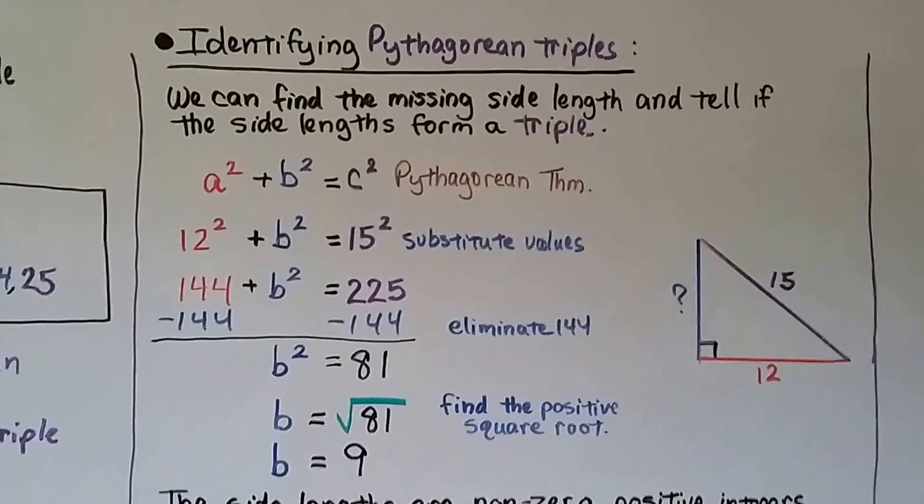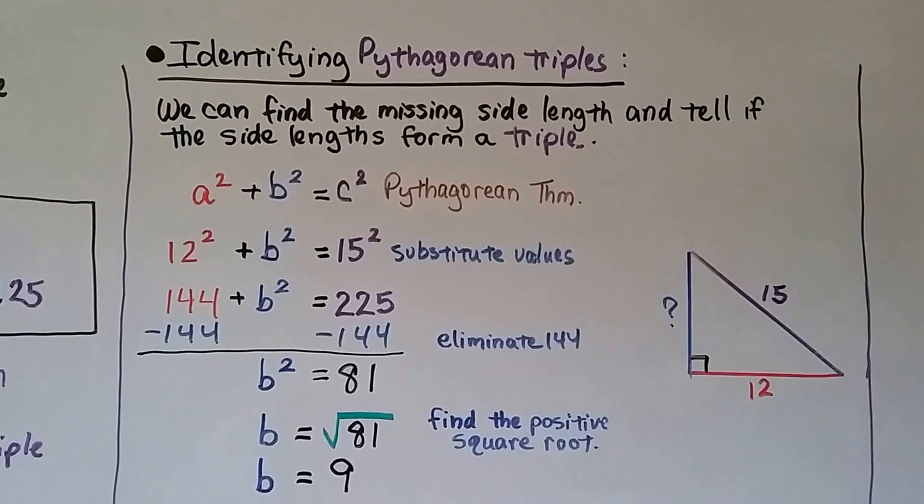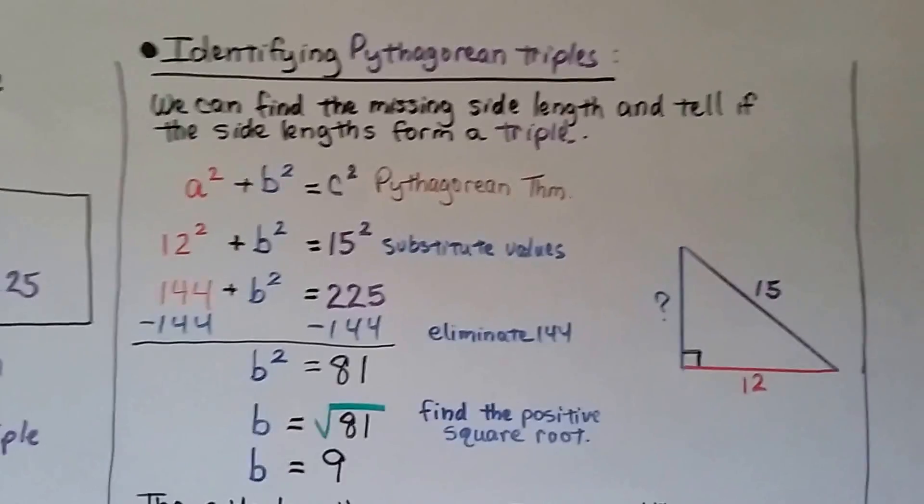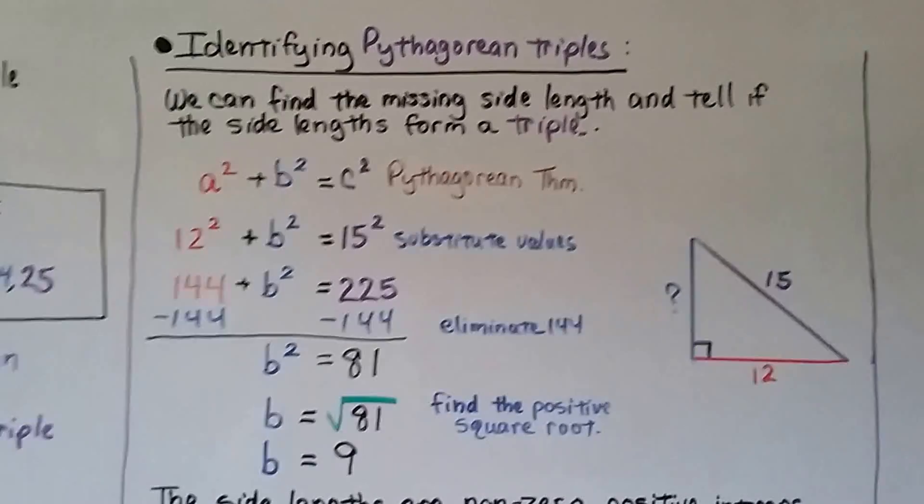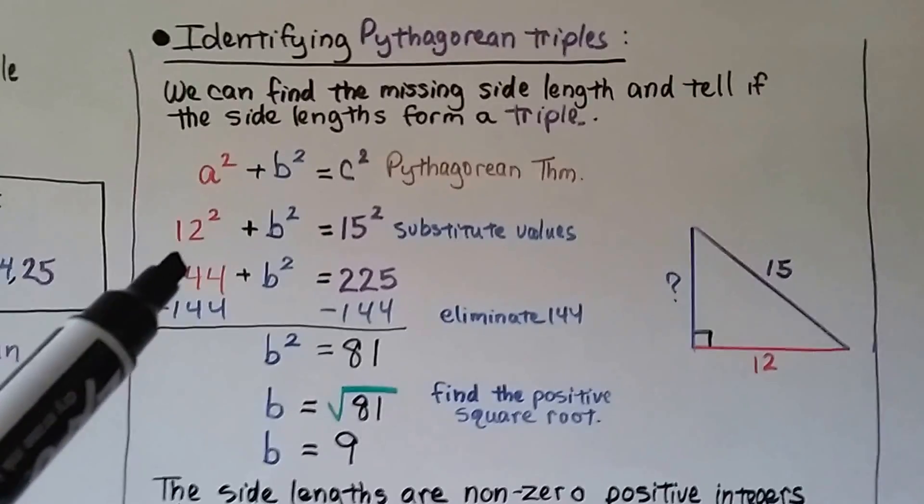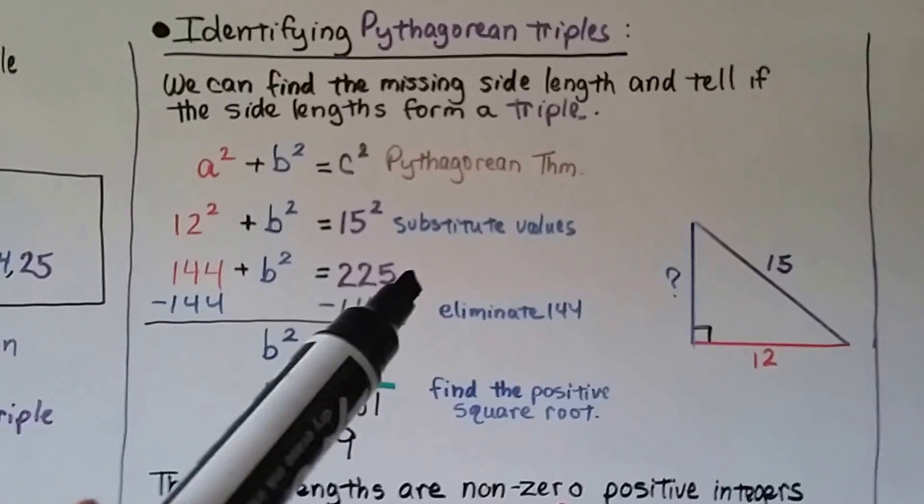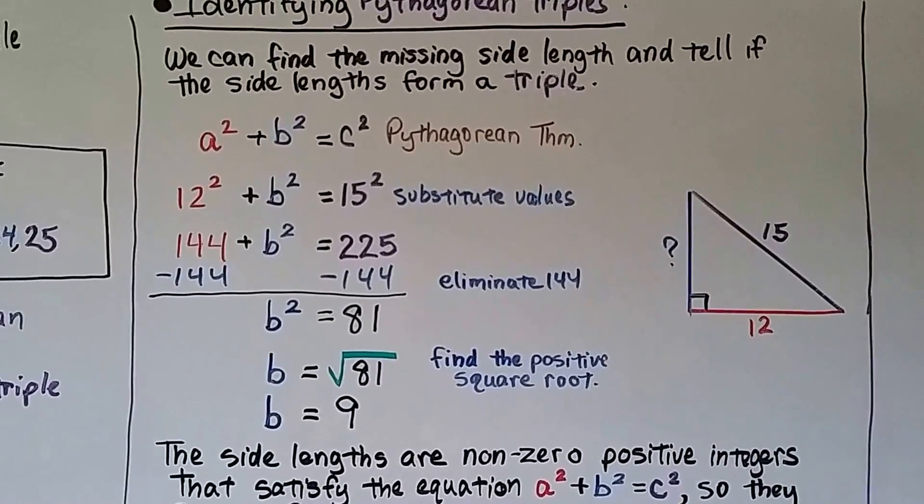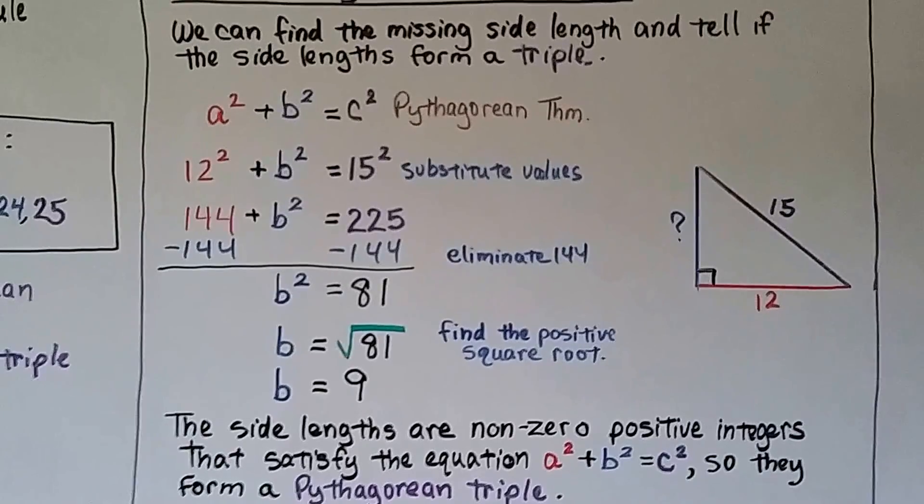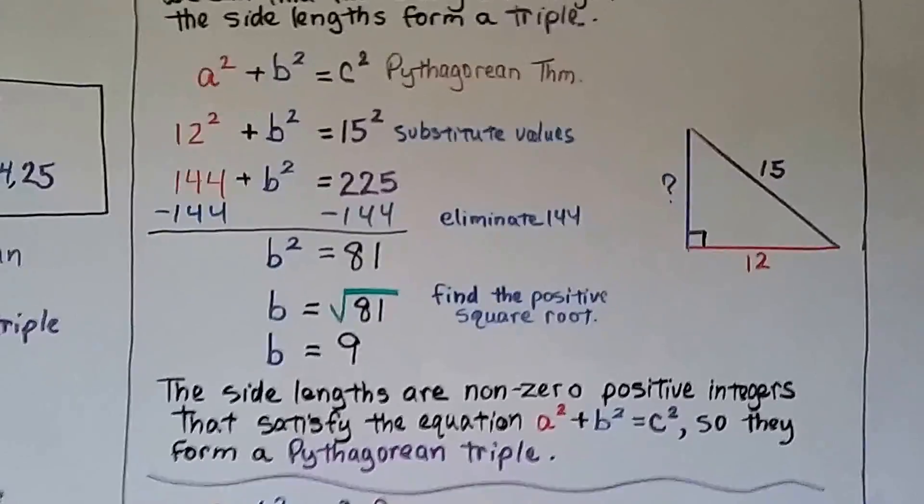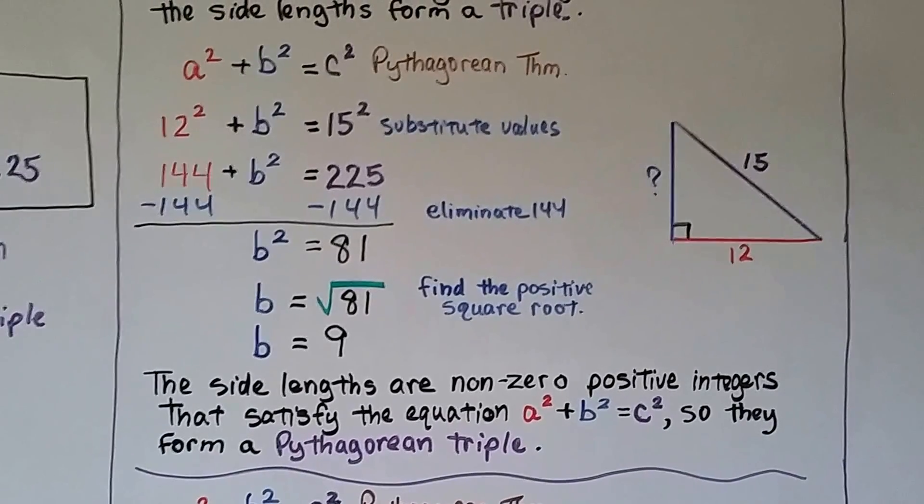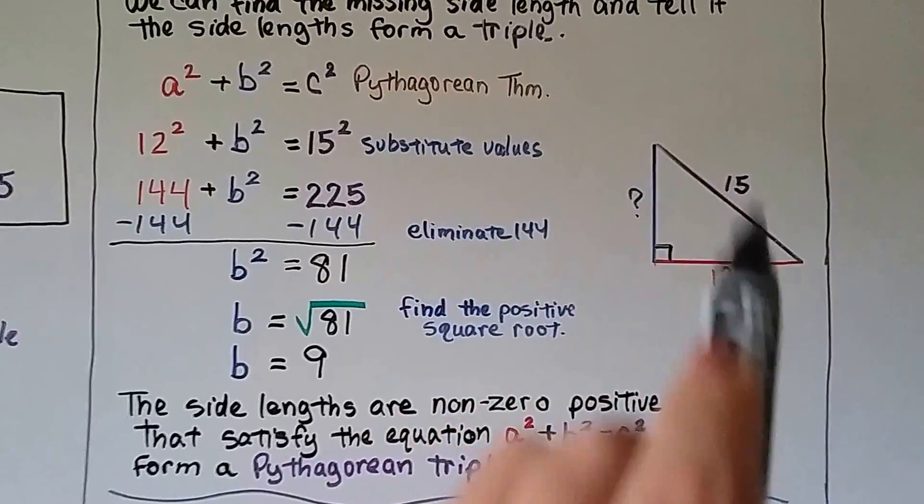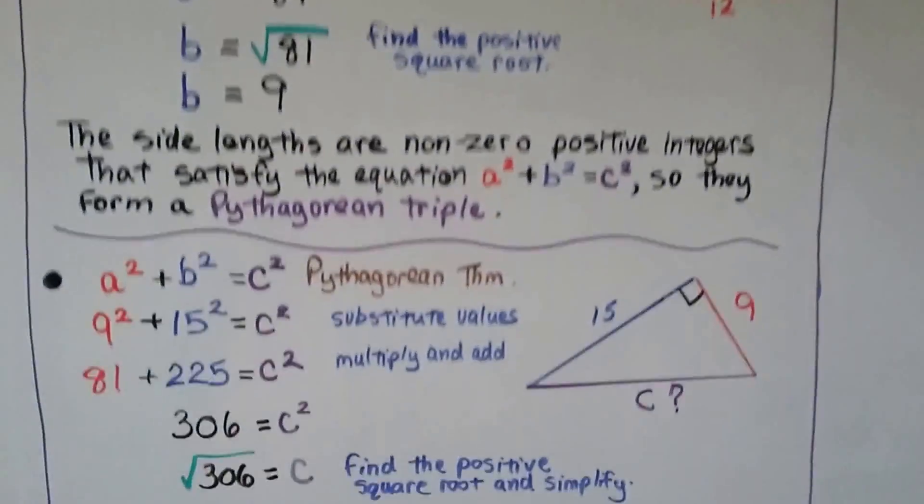Here's identifying Pythagorean triples. We can find the missing side length and tell if the side lengths form a triple. We've got a is 12 and our hypotenuse is 15, but we don't know what b is. So we've got 12 squared plus b squared equals 15 squared when we substitute the values. 12 squared is 144 plus the b squared equals 15 squared is 225. We can eliminate this 144 by subtracting it from both sides and we end up with b squared equals 81. We can take the little two exponent off and put a radical sign around the other side and we get b equals the square root of 81. So b equals 9. And the side lengths are non-zero positive integers that satisfy the equation a squared plus b squared equals c squared. So they form a Pythagorean triple. So 9, 12, and 15 would be a Pythagorean triple.